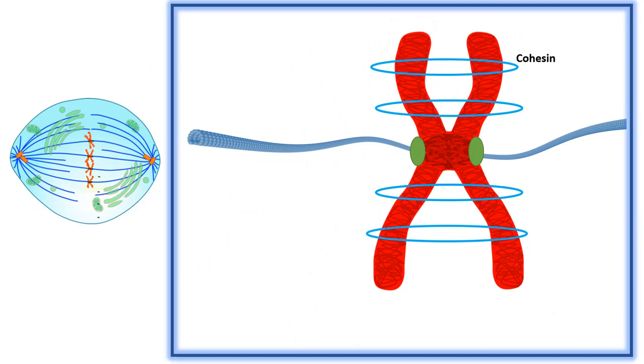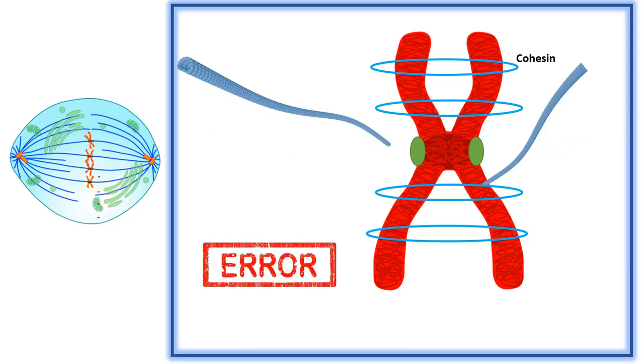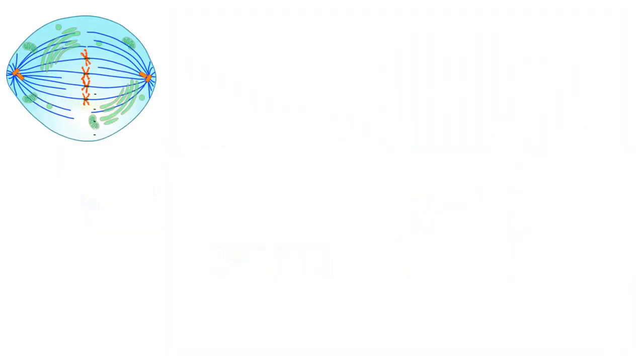The most important role that Cyclin B/CDK1 plays is making sure that the microtubules from the opposite poles are properly attached to the kinetochore region of metaphase chromosomes. If the tension is not equal on both sides, then it generates an error signal like depicted here.